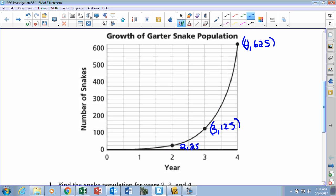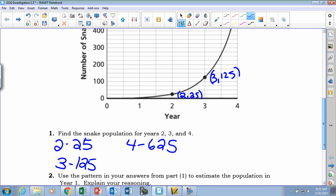So this is four and 625, this is three and 125, and this is two and 25. Okay. All right, so now it says use the pattern in your answers from part one to estimate the population in year one. Explain your reasoning. So well, if we're going from 25 to 125 to 625, what's our pattern here? I should say, what is our growth factor? Our growth factor is five.